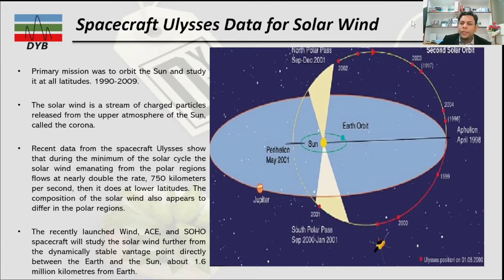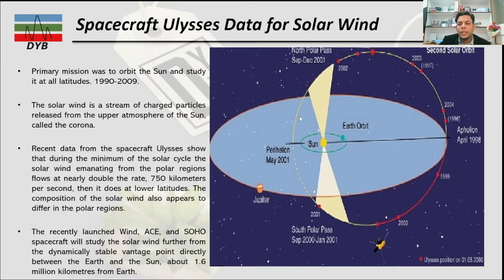On the right side, the figure shows the data and orbit of the Ulysses spacecraft. It started in 1990, and you can see data from 1999 through 2003. The Earth's orbit and Jupiter's orbit are marked in the figure, while the Ulysses spacecraft followed an orbit in a different dimension — tilted relative to the ecliptic plane.